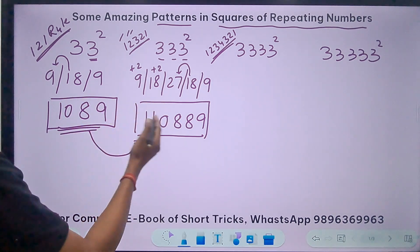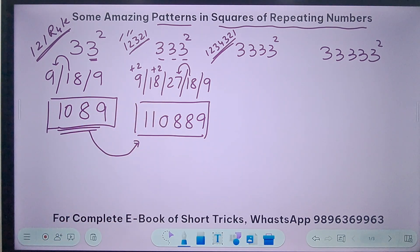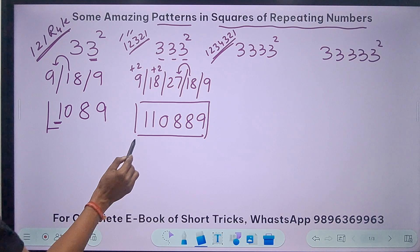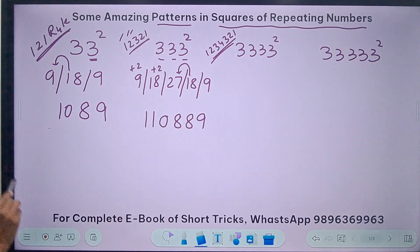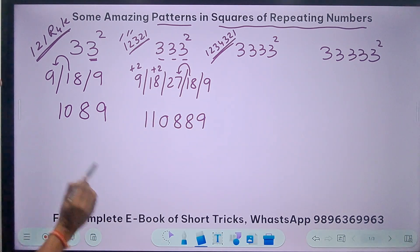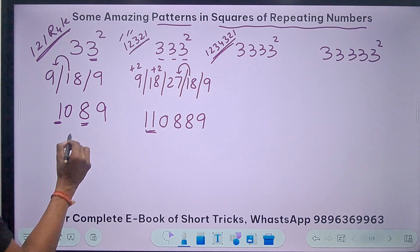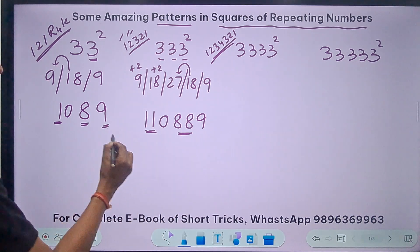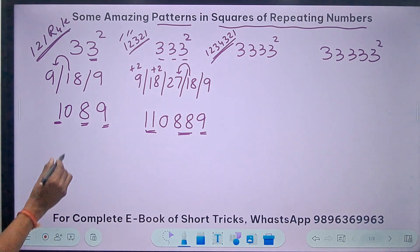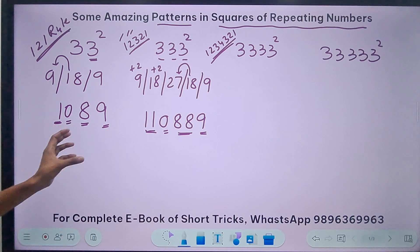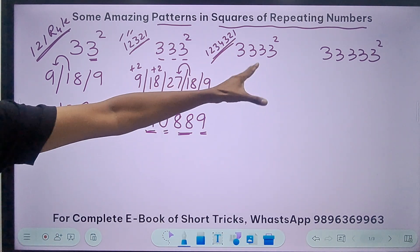Now where is the pattern? Comparing 1089 and 110889: there is a single 1 in 33² and two 1s in 333²; a single 8 and a double 8; a single 9 and a single 9; and a zero sits between the ones and the eights. Does this pattern continue in 3333 squared? Let's check.